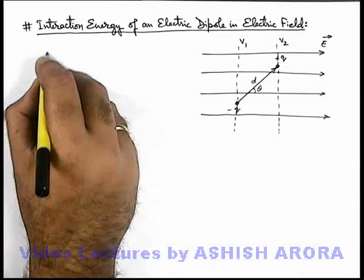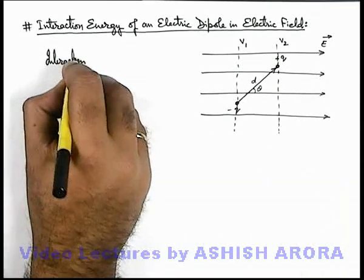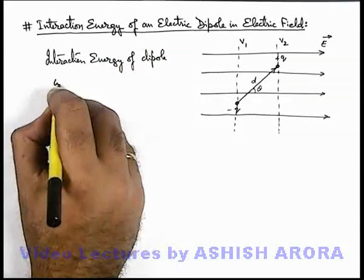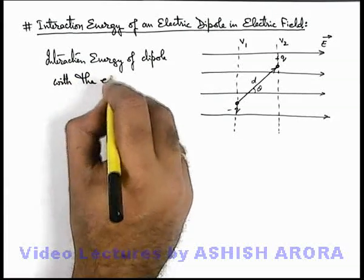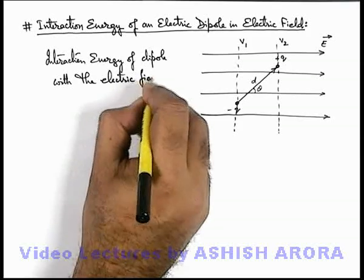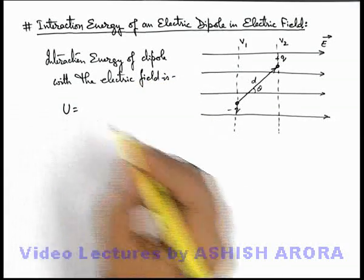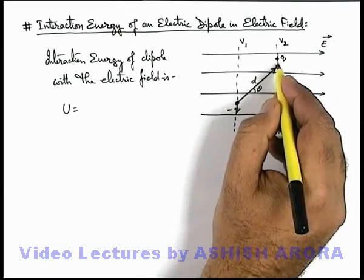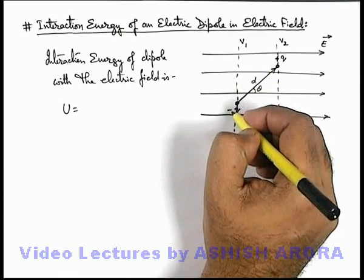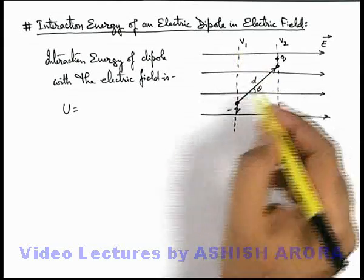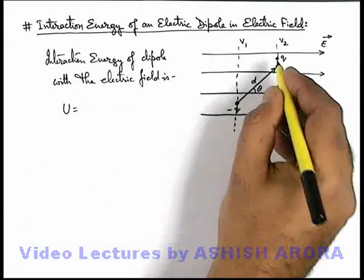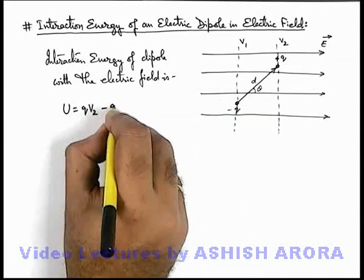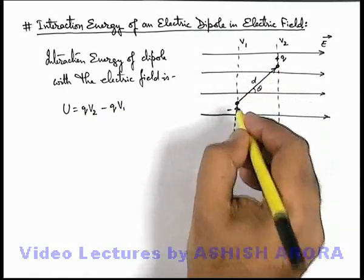Now in this situation, the interaction energy of the dipole with the electric field can be written as follows. There are only two charges in the dipole — one is plus q and the other is minus q. Plus q is located at a point where potential is V2, and minus q is located at a point where potential is V1. So the energies of the charges in the field are q·V2 and minus q·V1 respectively.